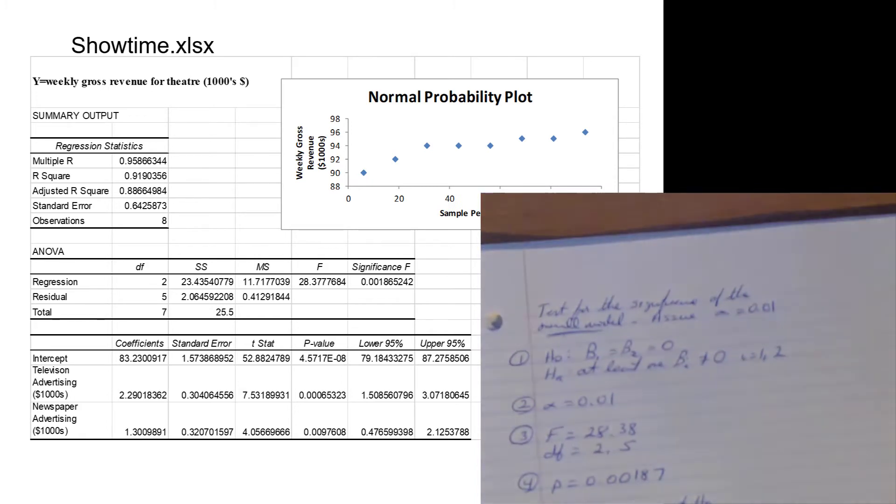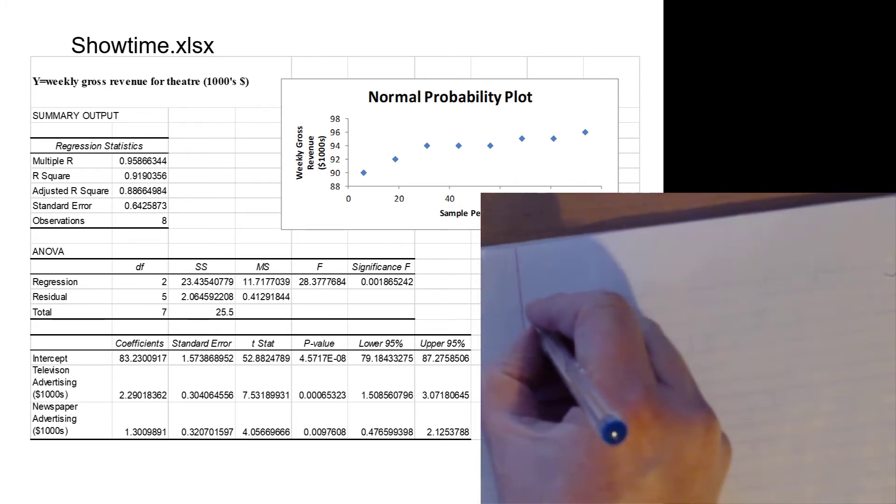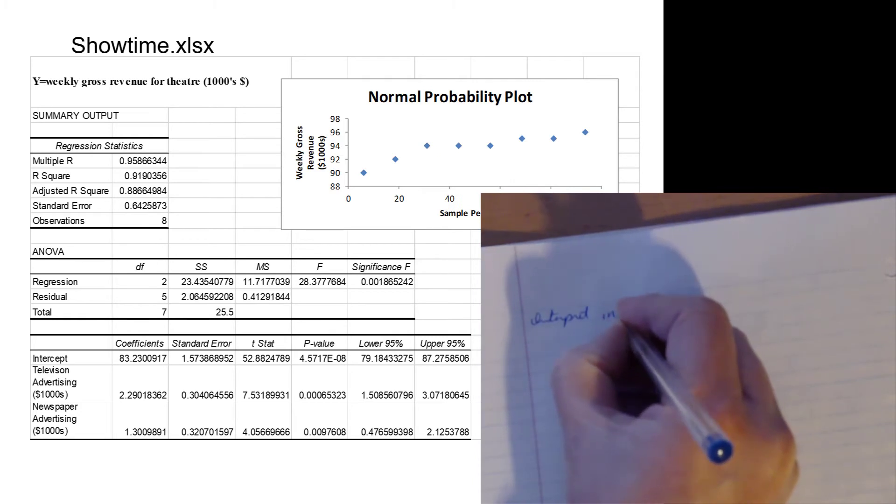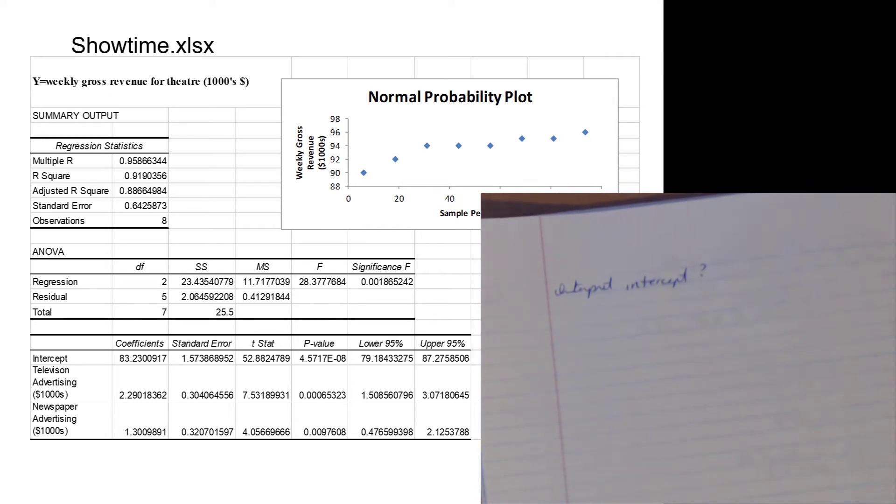Now let's look at some of our interpretations of these slopes. Let's look at the interpretation for the intercept. First of all, the intercept means that both x variables have to equal zero, and if both x variables equal zero, this is what we would expect weekly gross revenue to be equal to. We look at that intercept and we see a value of 83.23, and we consider okay, that's 83,000 bucks.